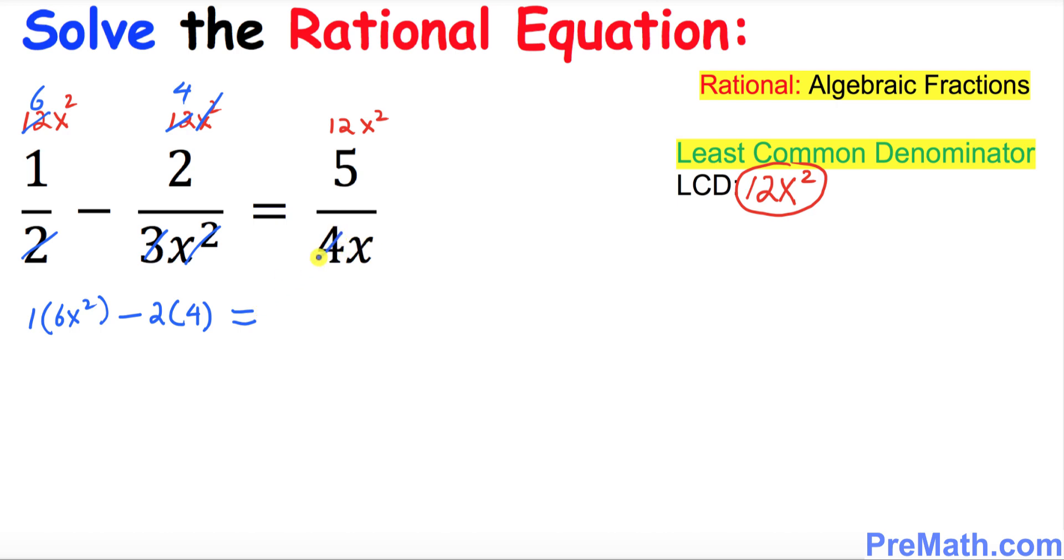Equals to same thing, we're gonna do 4 divides into 12 three times. This 1x cancel to this x square, we simply ended up with x. So we got simply 5 times 3x.